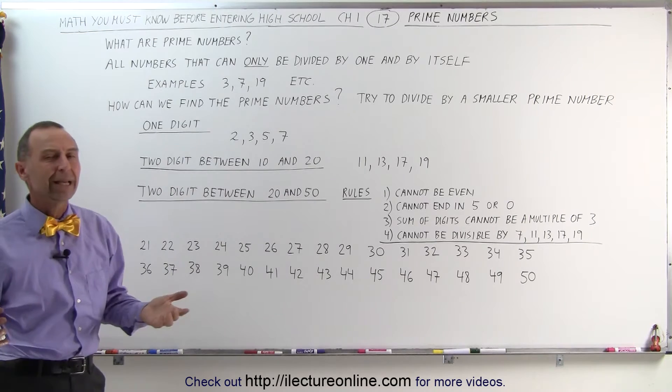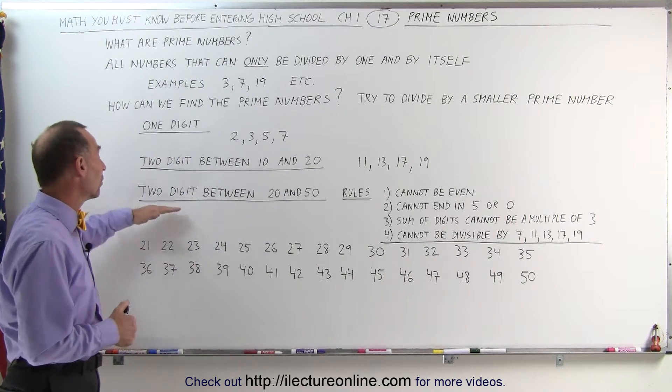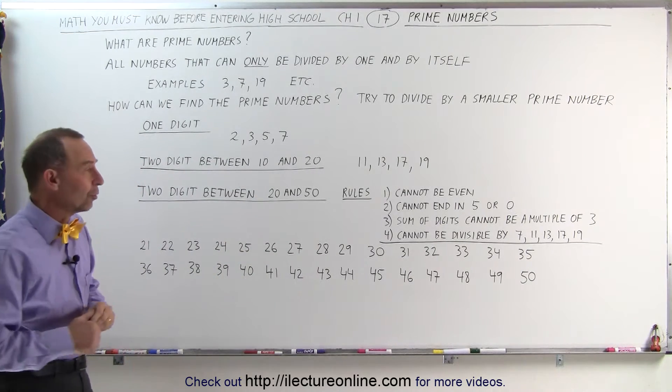But when the numbers get bigger, it's not as obvious as to figure out when you have a prime number or not. For example, the numbers between 20 and 50. Well, the rules are as follows.